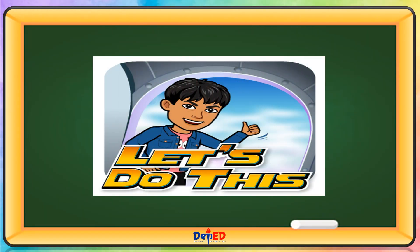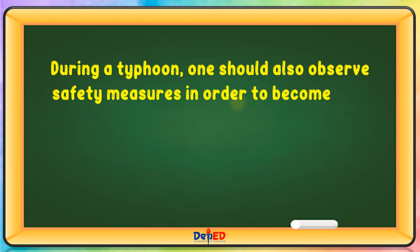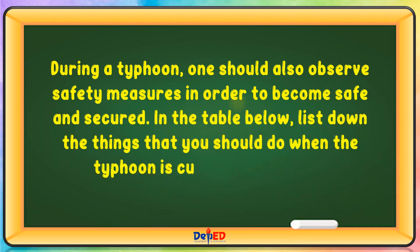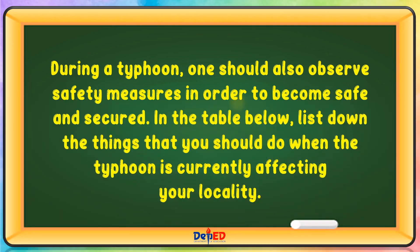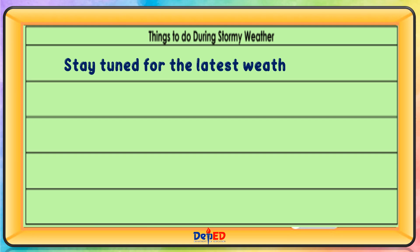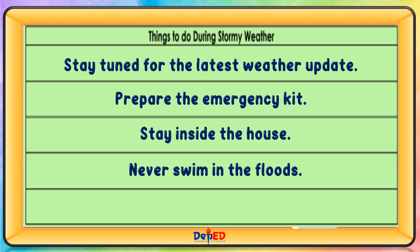Let's do this! During a typhoon, one should also observe safety measures in order to become safe and secured. In the table below, list down the things that you should do when the typhoon is currently affecting your locality. Things to do during stormy weather: stay tuned for the latest weather update, prepare the emergency kit, stay inside the house, never swim in the floods, and follow weather agency guidelines.